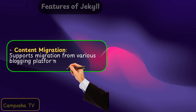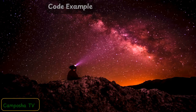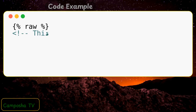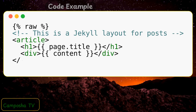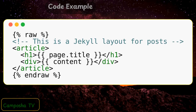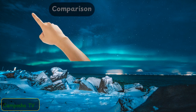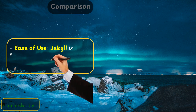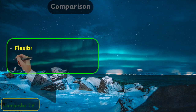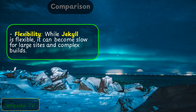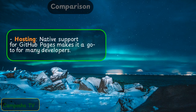Content migration — Jekyll supports migration from various blogging platforms. Jekyll is very beginner friendly, especially for those familiar with Markdown and HTML. While Jekyll is flexible, it can become slow for large sites and complex builds. Native support for GitHub Pages makes it a go-to for many developers.